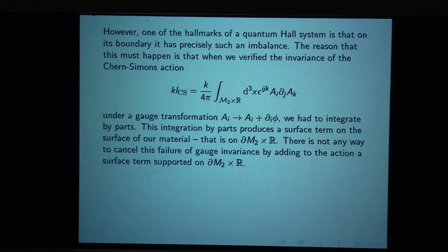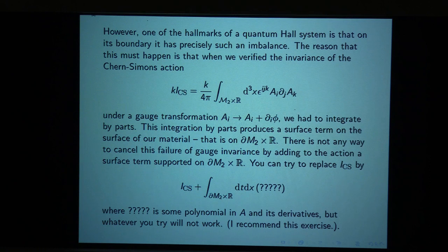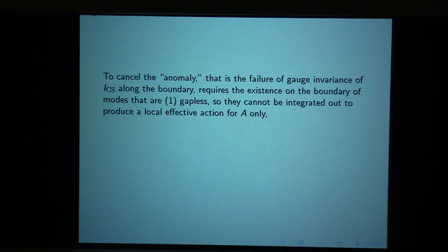In general, in the interaction of an electromagnetic potential with a material, there are boundary terms as well as bulk terms. So you should ask whether, among the many possible boundary terms in the effective action, there is a term whose failure of gauge invariance would cancel what we get by integrating by parts. You should try to add a boundary contribution to the effective action — a polynomial in A and its derivatives — to make it local. Whatever you try won't work. There is no way with a local effective action to cancel the problem with gauge invariance.